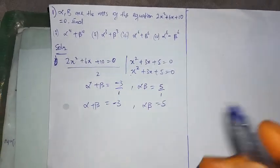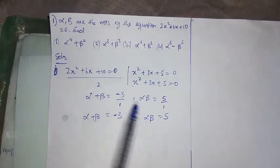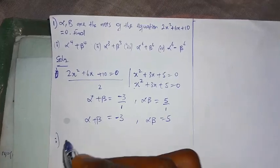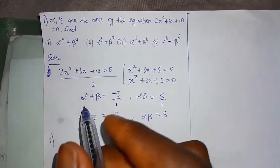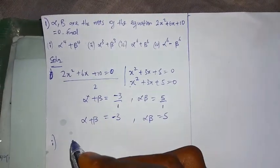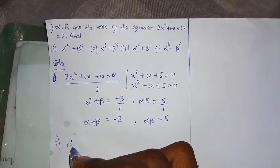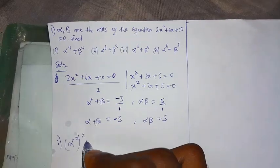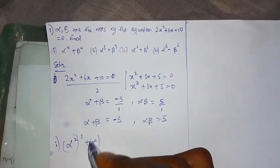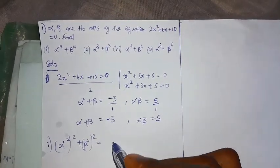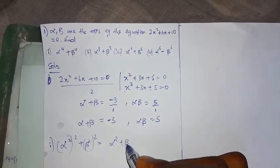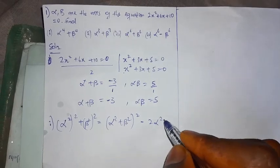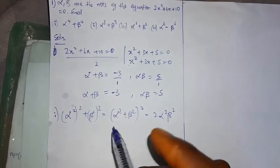Using these two values, I'll solve for the expressions. The first one: alpha to the power 4 plus beta to the power 4. This is the same thing as (alpha² + beta²)² minus 2(alpha·beta)².